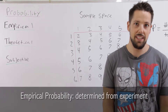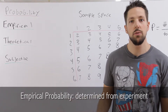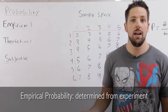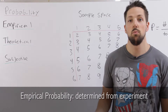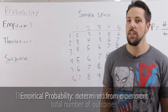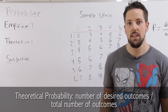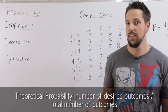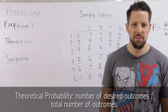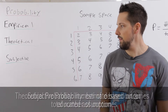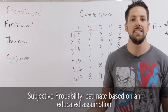Empirical probability comes after the event has occurred. So if you flip a coin 30 times and it comes up every heads, the empirical probability of the event is 100% heads. Theoretical probability is you predicting it before the event happens, so the probability of getting heads when you flip a coin is one over two, 50%. And subjective probability is the probability based on an estimate — your best guess.